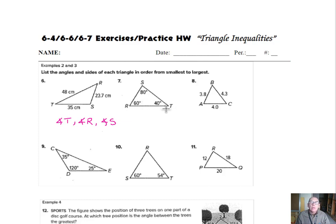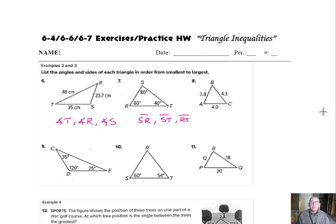Looking at number 7, the smallest angle is at T, so the side opposite that, which is SR, is going to be the smallest side. The next angle in order is 60, angle R, and ST is opposite that — that's the medium sized side in the triangle. The biggest angle is S, which is 80, so side RT has to be the largest side of the triangle since it's opposite the 80.